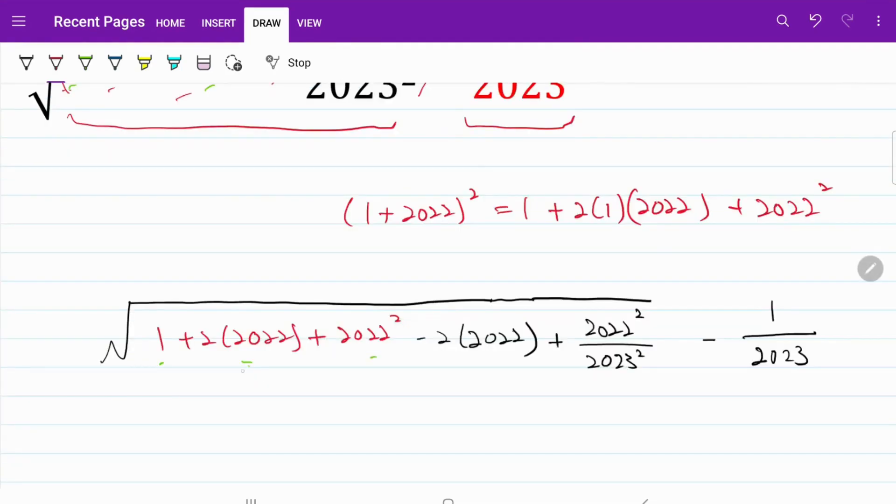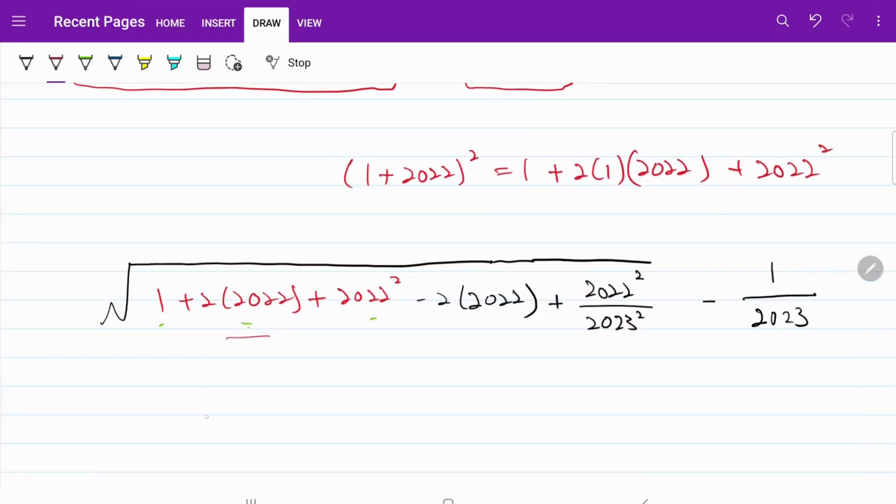As you may have noticed, the red color portion here will be converted to 1 plus 2022 squared. The whole thing is within a square root, and minus the fraction of 1 over 2023. We have solved the first part of the puzzle. But what remains is how do we convert this part right here into a perfect square.